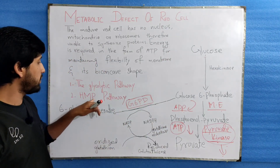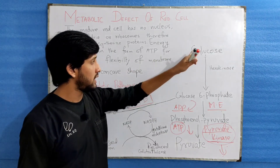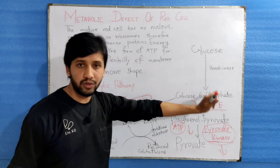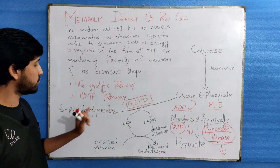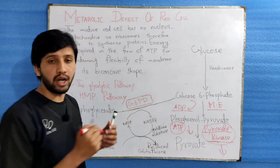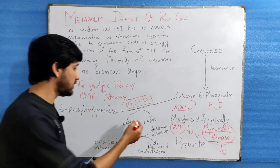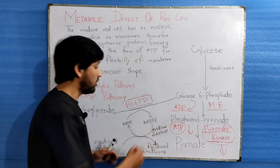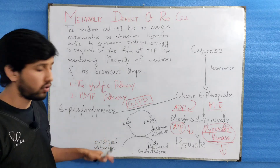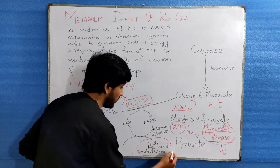The second pathway required for energy production is the HMP pathway — the hexose monophosphate pathway. The first step is the same: glucose is converted into glucose-6-phosphate. In the second step, glucose-6-phosphate is converted into 6-phosphogluconate by the enzyme glucose-6-phosphate dehydrogenase, or G6PD. This reaction is very important because it produces NADPH.